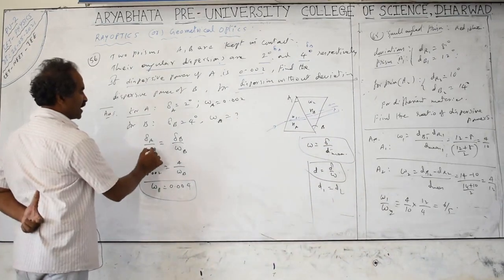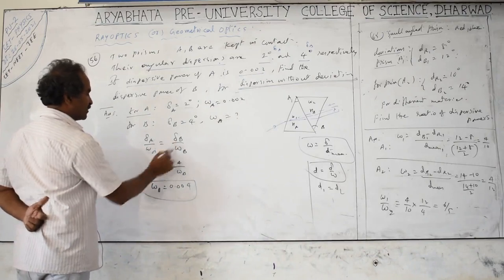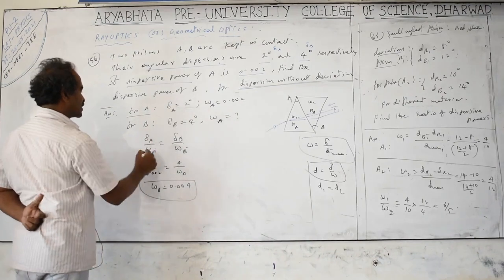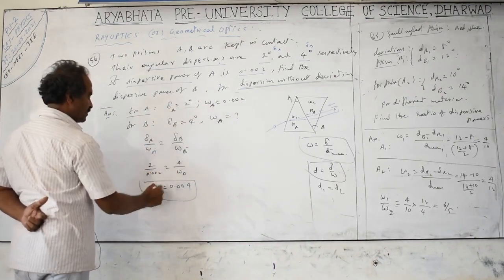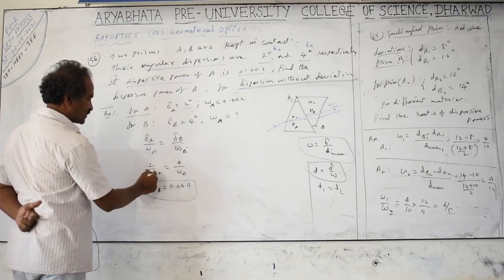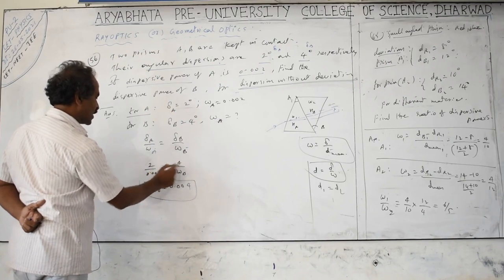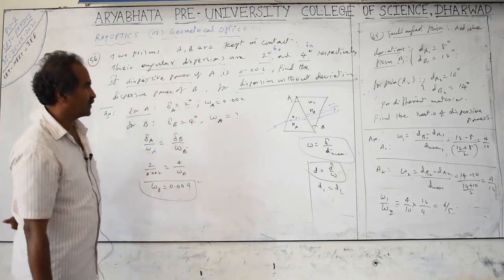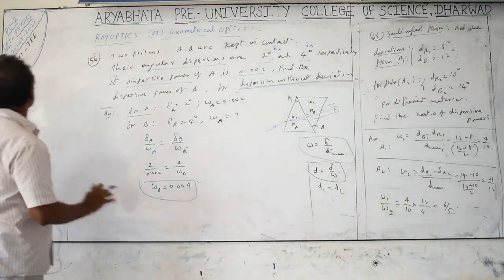So delta_A by omega_A equals delta_B by omega_B. We need to find omega_B. Substituting: delta is 2 degrees, omega is 0.002, equals 4 by omega_B. Cross multiplication gives omega_B equals 0.004. That is the answer. This problem is only for NEET and JEE, not for K-SET students.